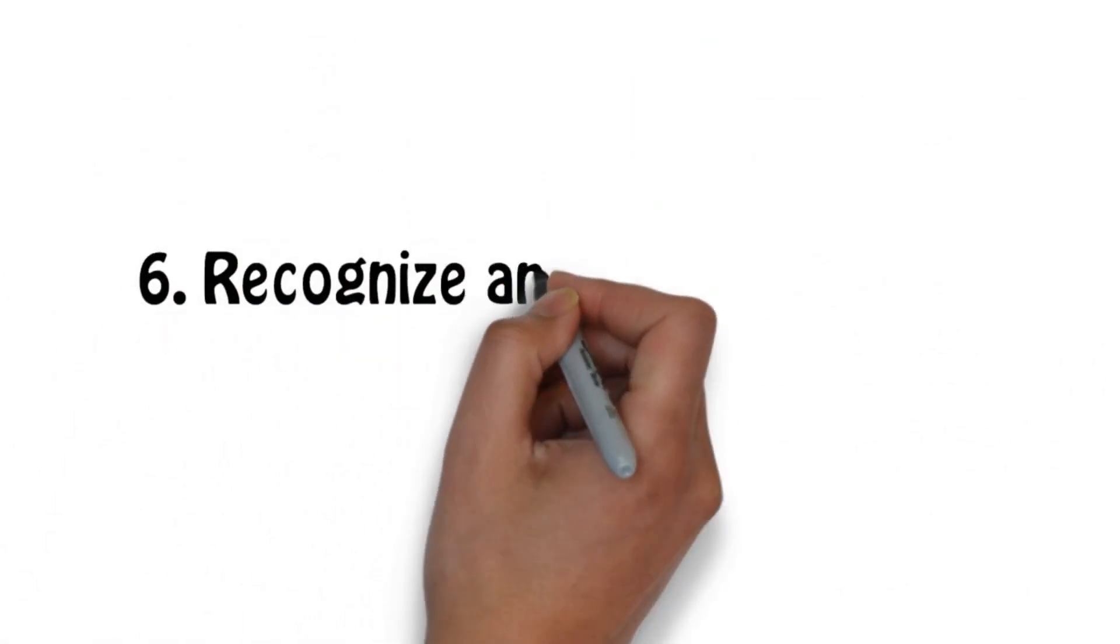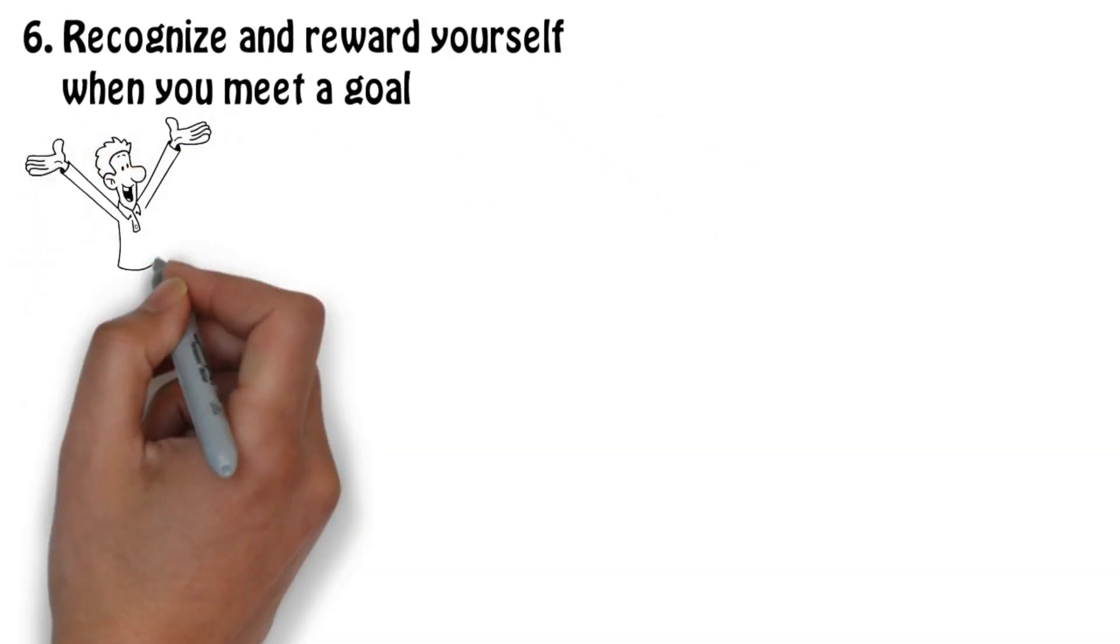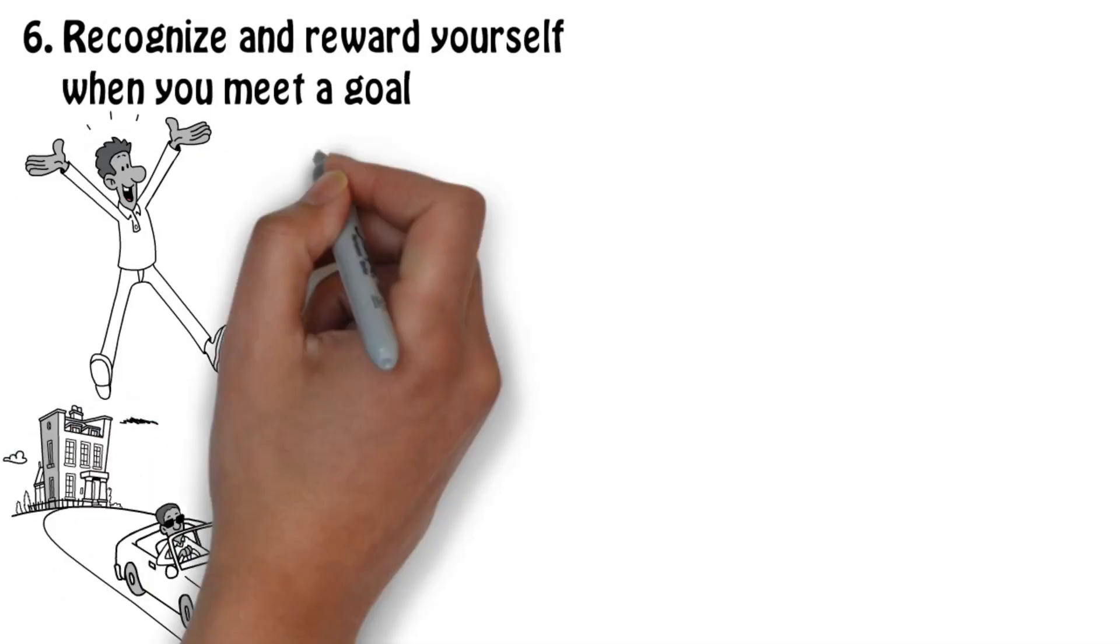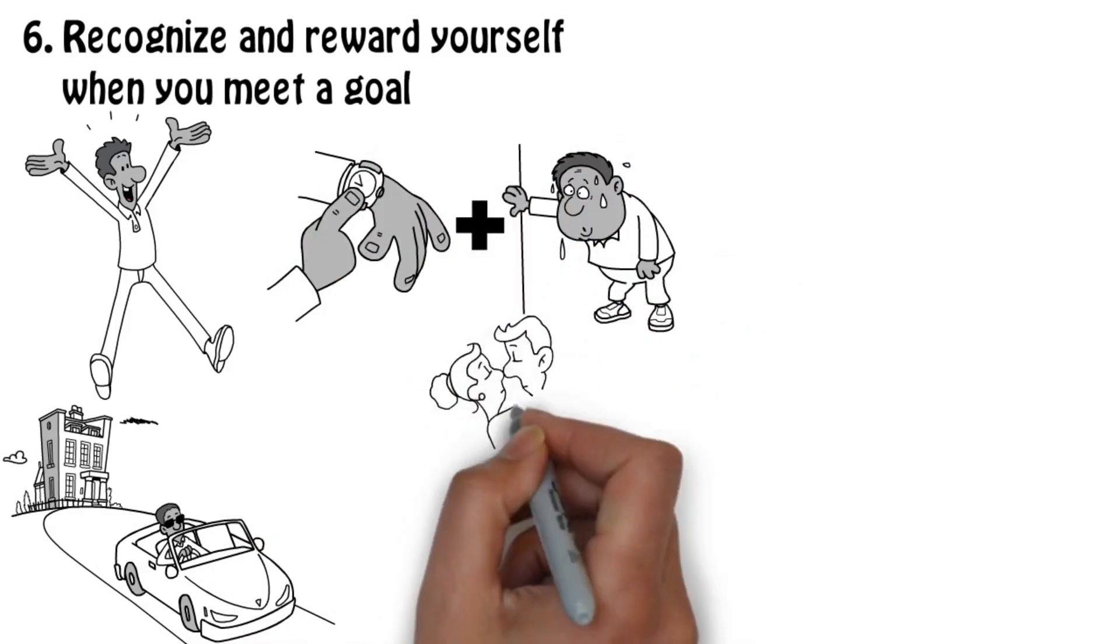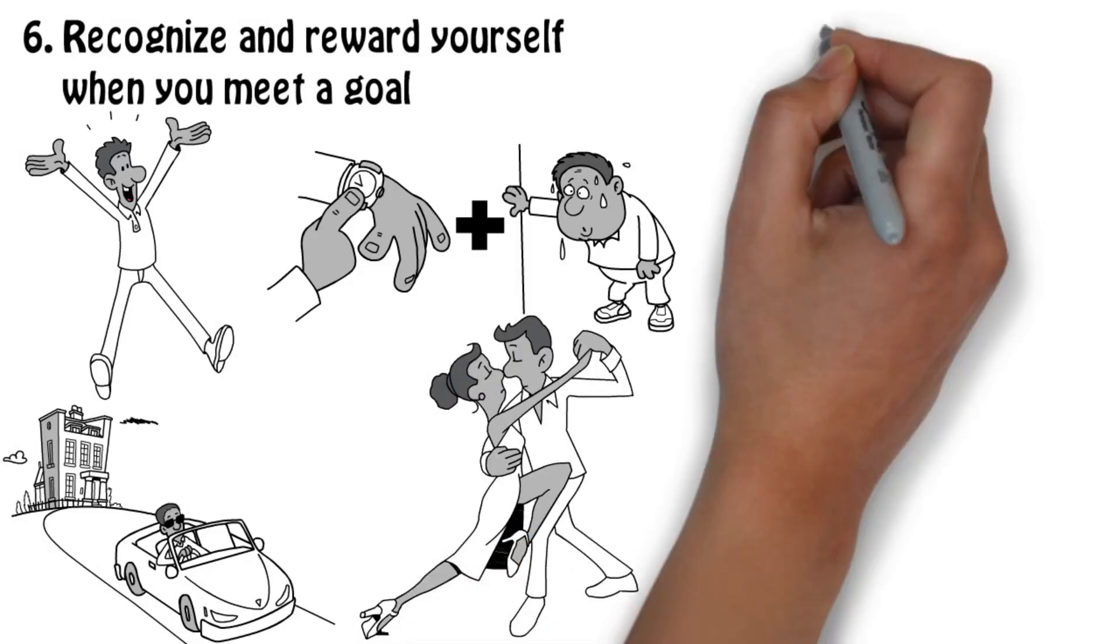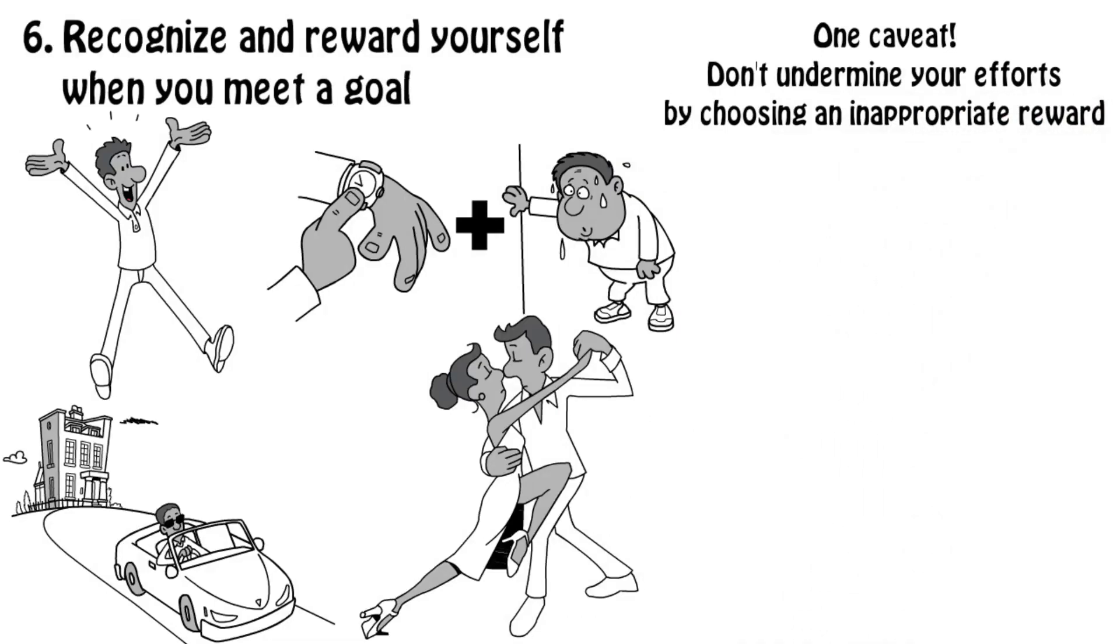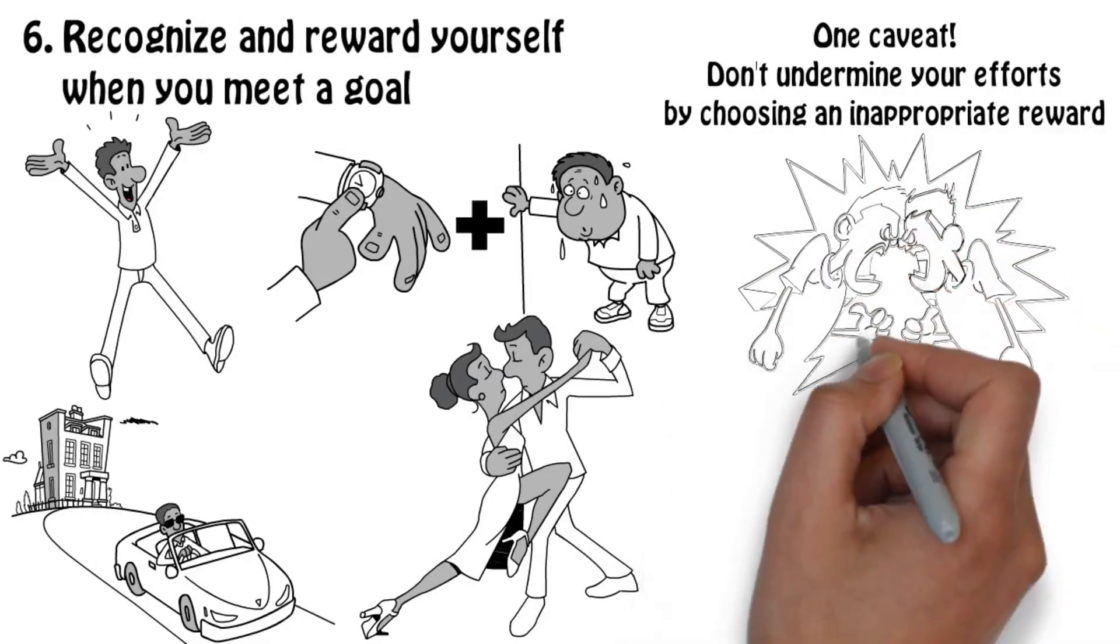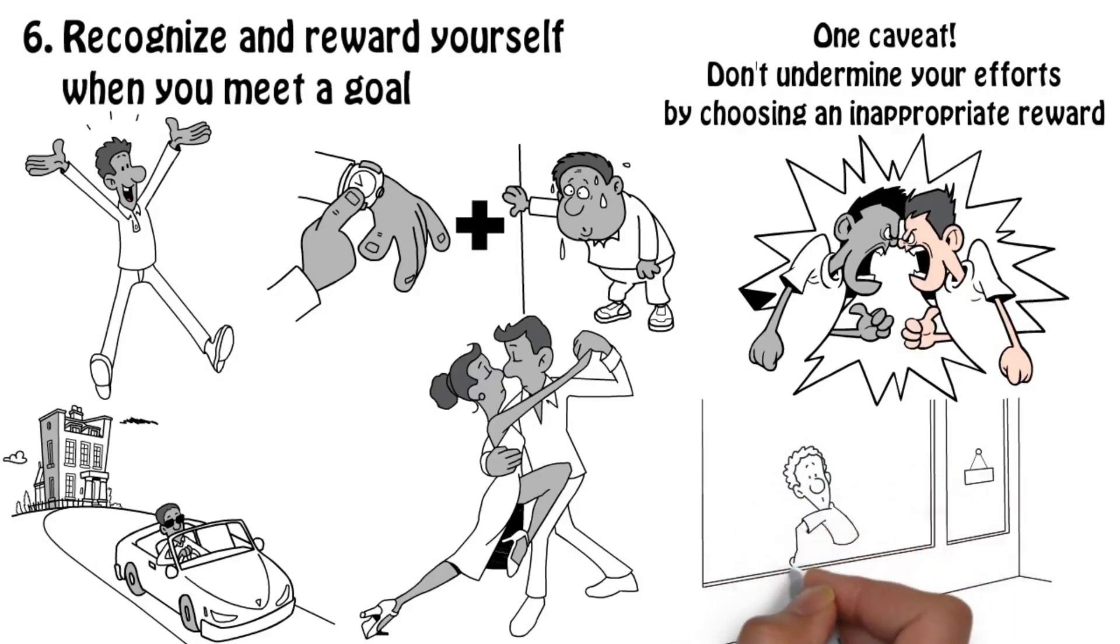Number 6: Recognize and reward yourself when you meet a goal. Internal satisfaction is a great thing, but external rewards can be immensely satisfying too. When you accomplish a goal, you devote time and effort to your success, so take the time to celebrate your success too. Now one caveat, don't undermine your efforts by choosing an inappropriate reward. Getting into an altercation while intoxicated from celebrating is not an appropriate reward for losing 20 pounds. How about you get a new outfit, go shopping. I think that would be a more suitable choice.